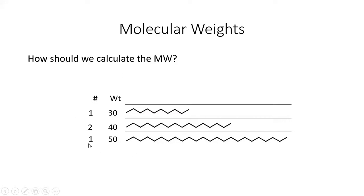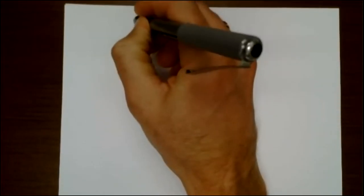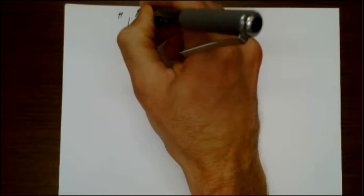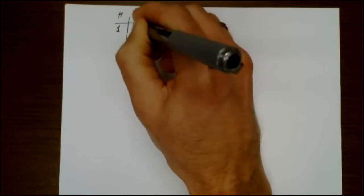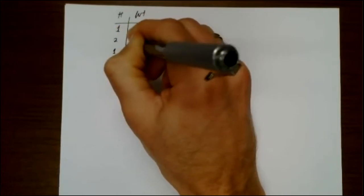Suppose I gave you this very simple distribution of molecular weights of this polymer. I drew this - some of them are longer, some of them are much longer. I want to know the molecular weight of the sample. How do I do that? Let me move over to my sheet of paper here. I can do it in two ways. I have number and weight. I know that I have one chain that's 30, two chains that are 40, and one chain that is 50.